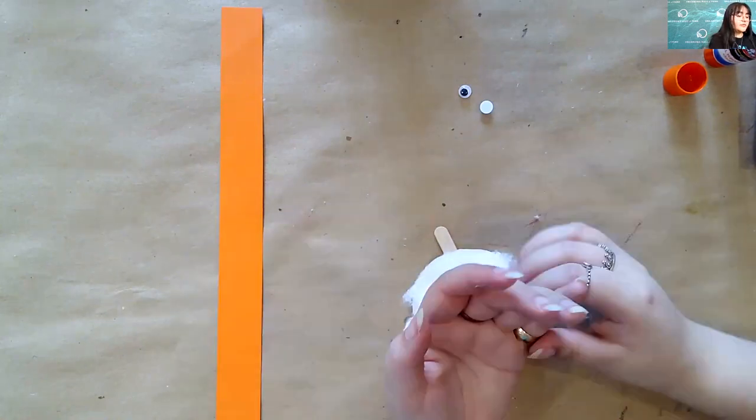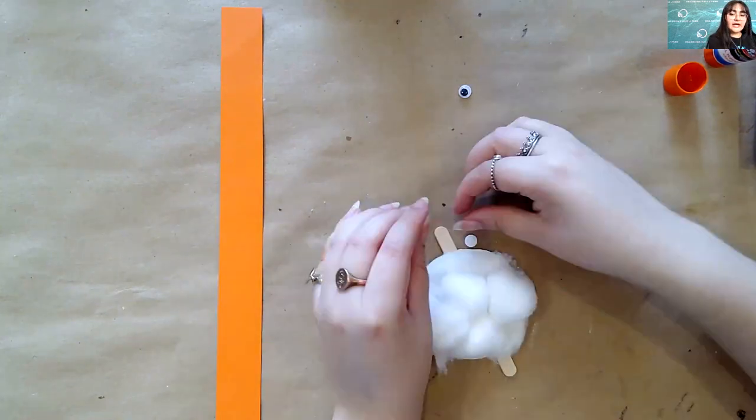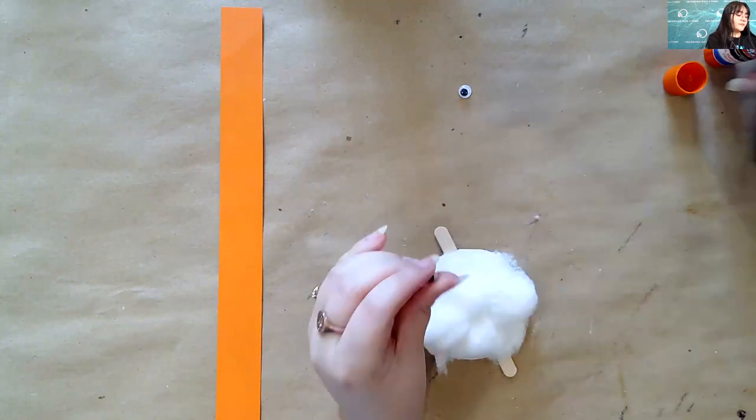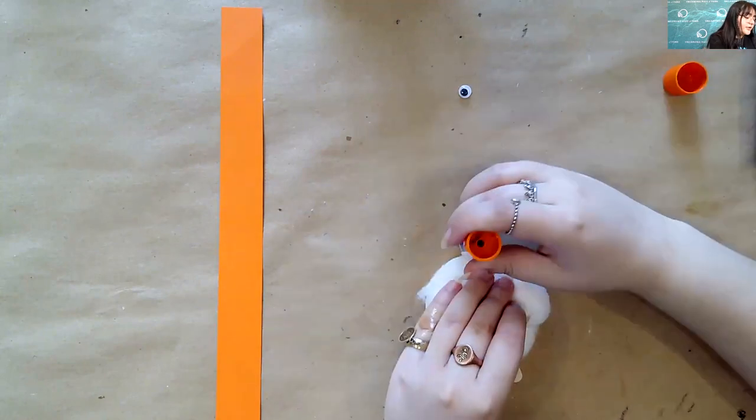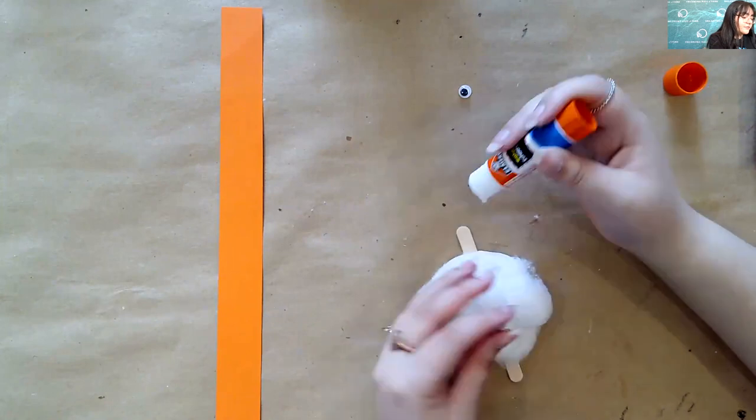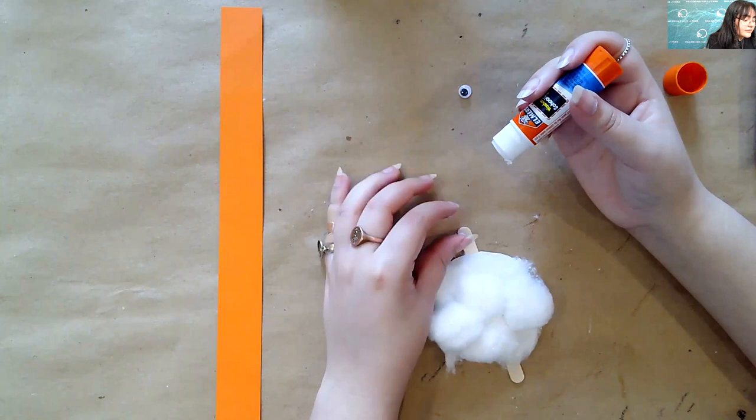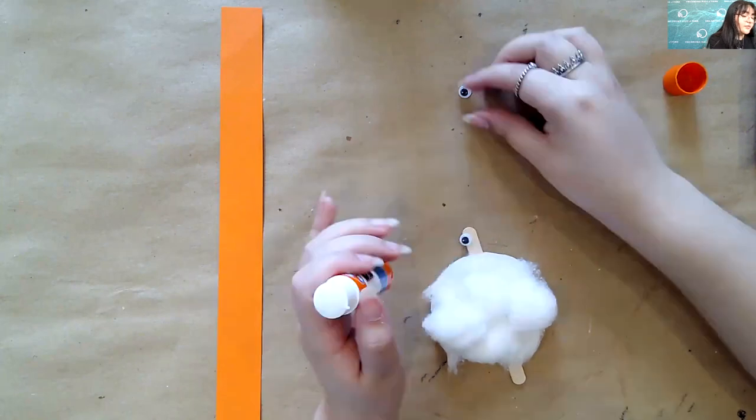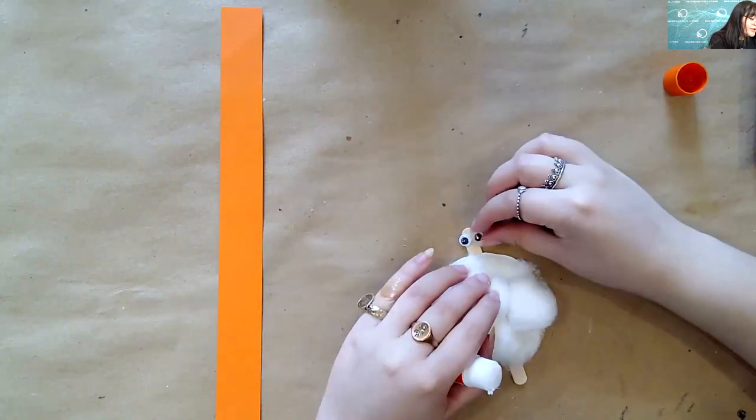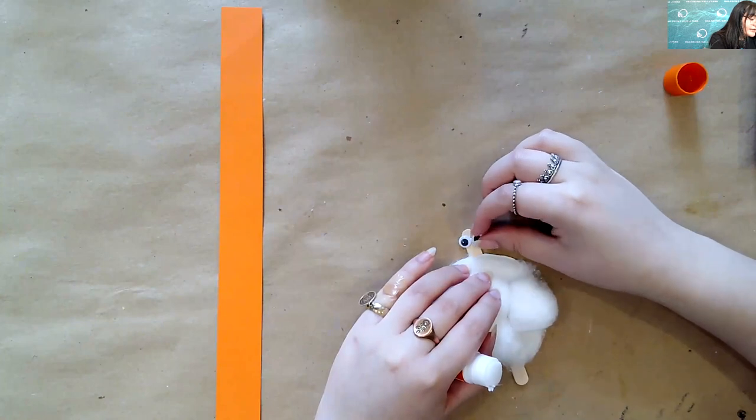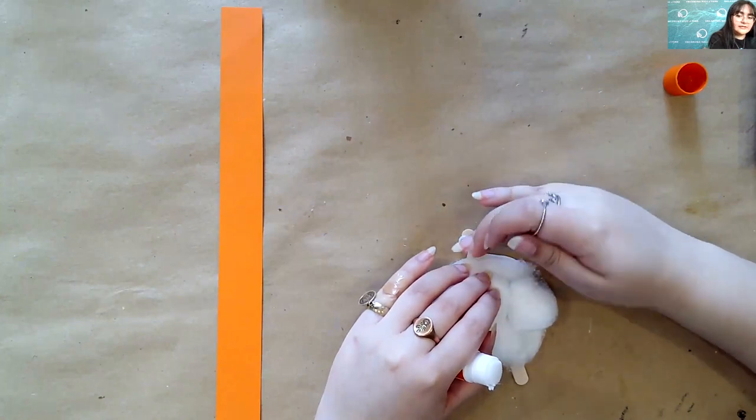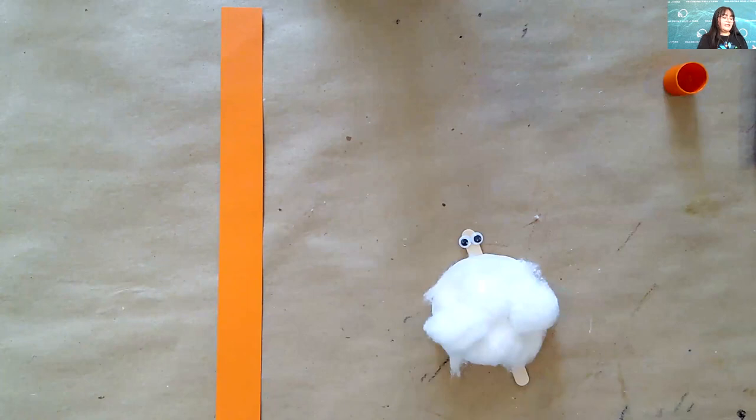So, the next step would be to go ahead and add some eyes to our popsicle sticks. I'm going to add some. And they might not be absolutely centered because I said I don't have small ones and our popsicle sticks are pretty small. So, they might have to be a little bit like this. But it works, right? So, we got some eyes. Awesome.